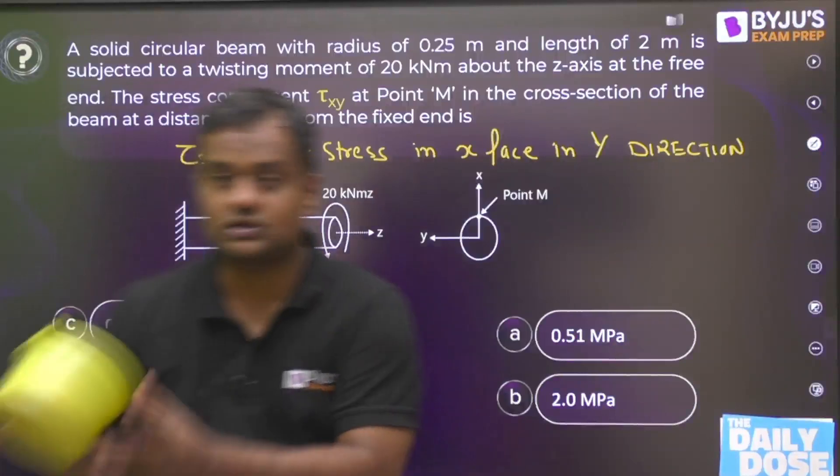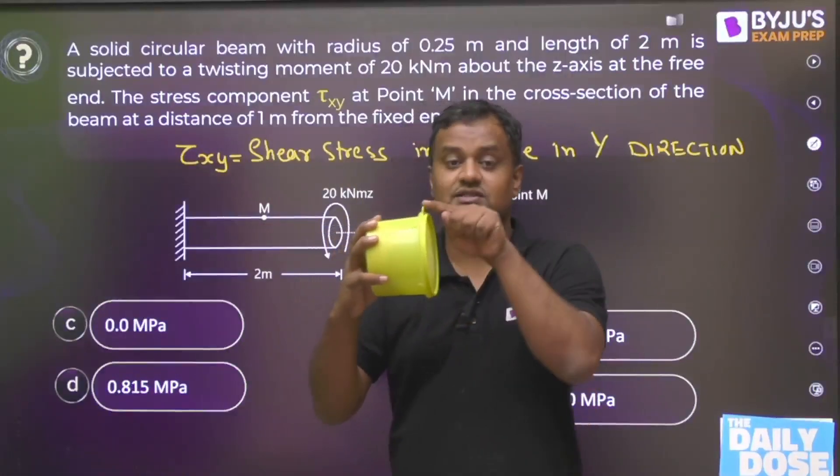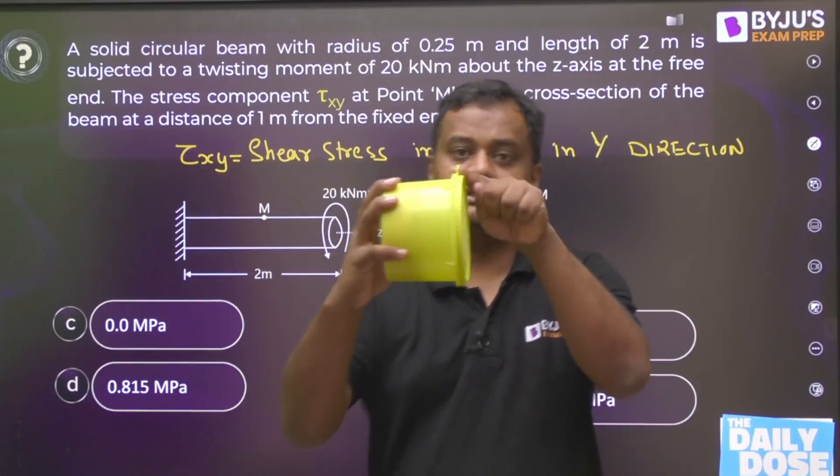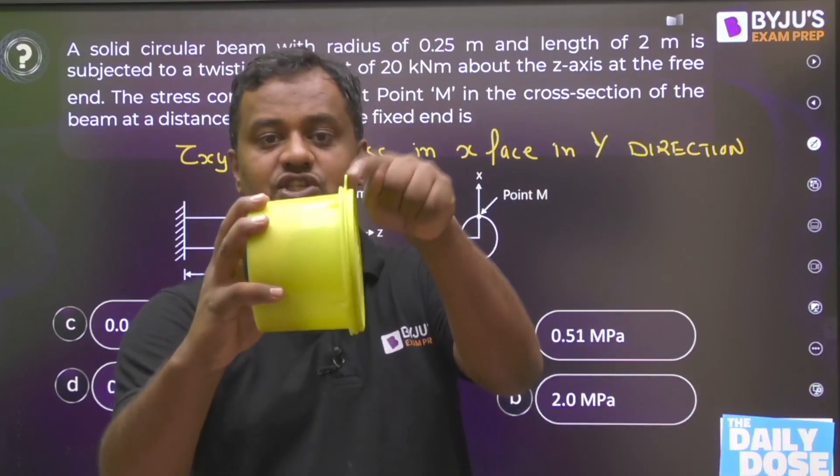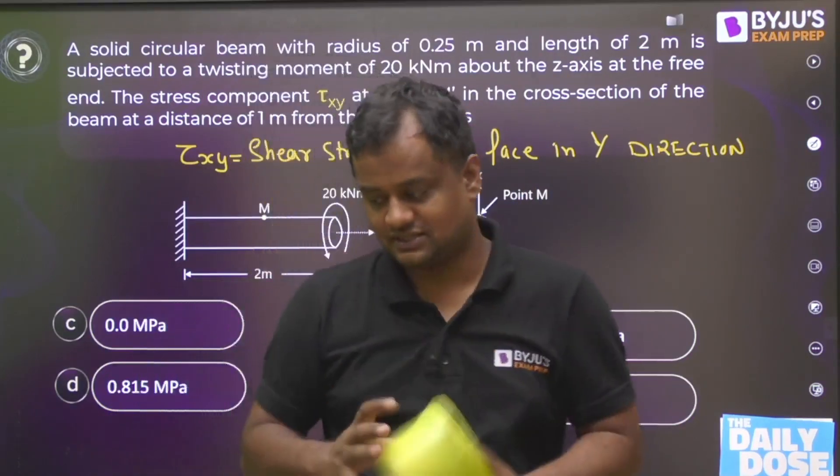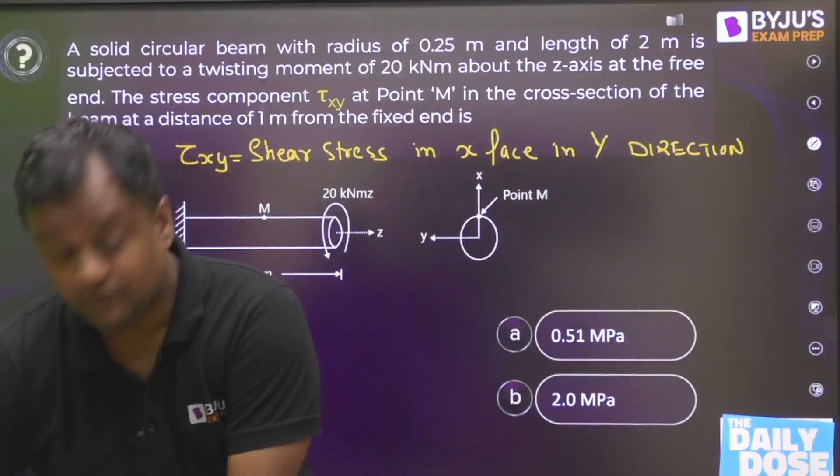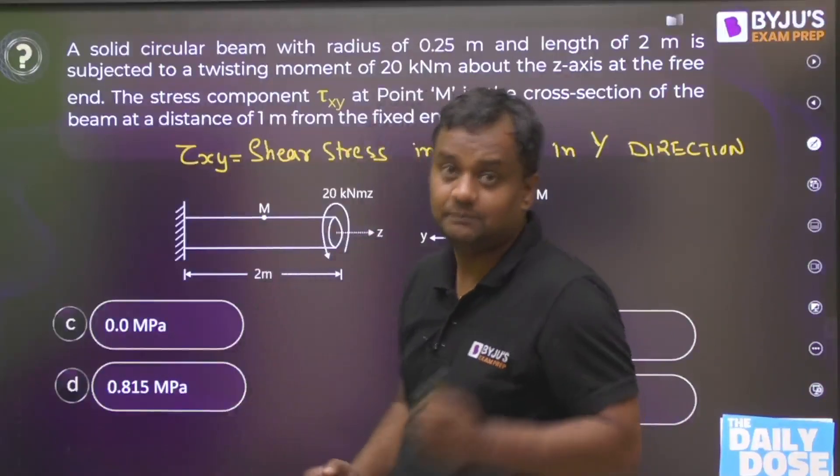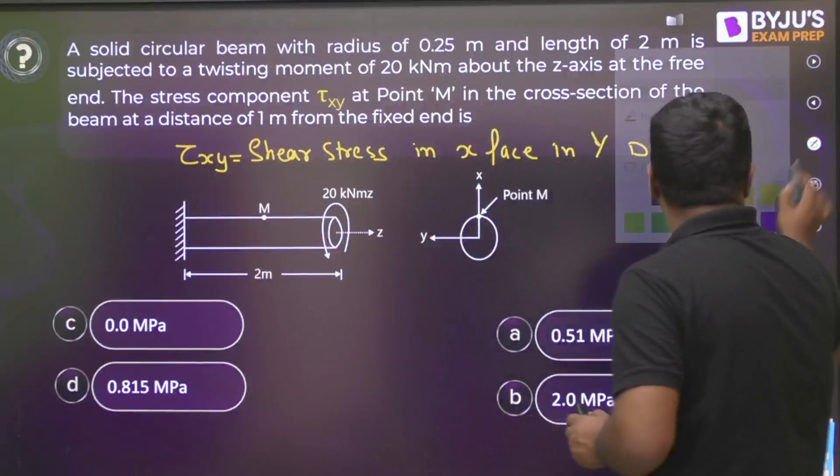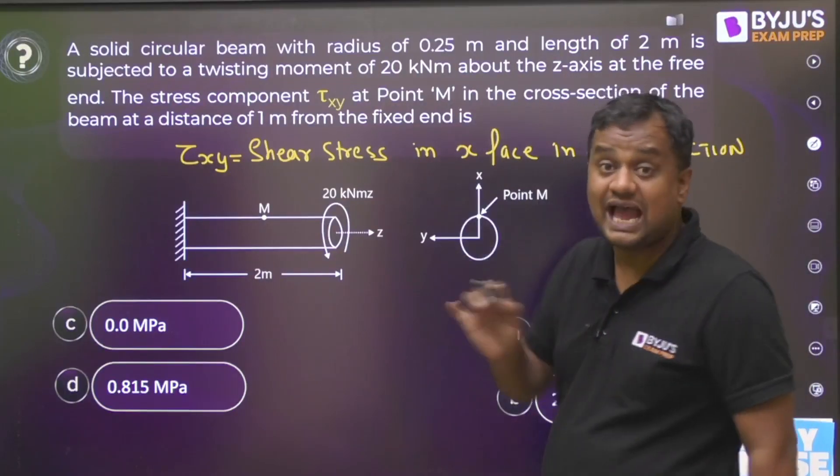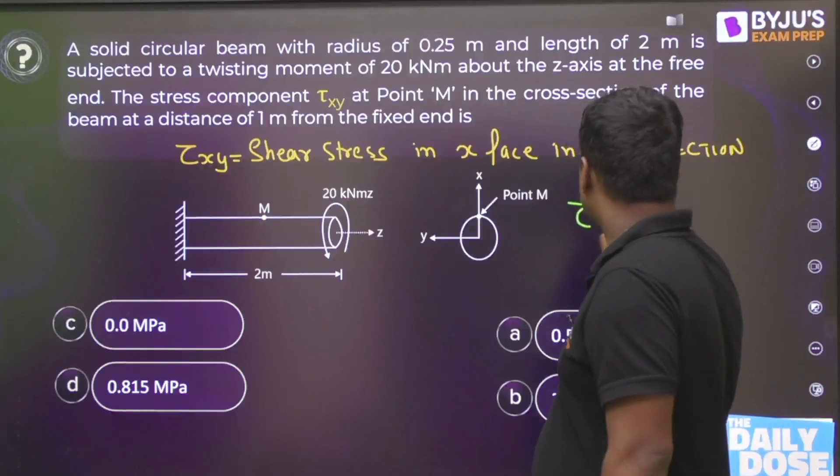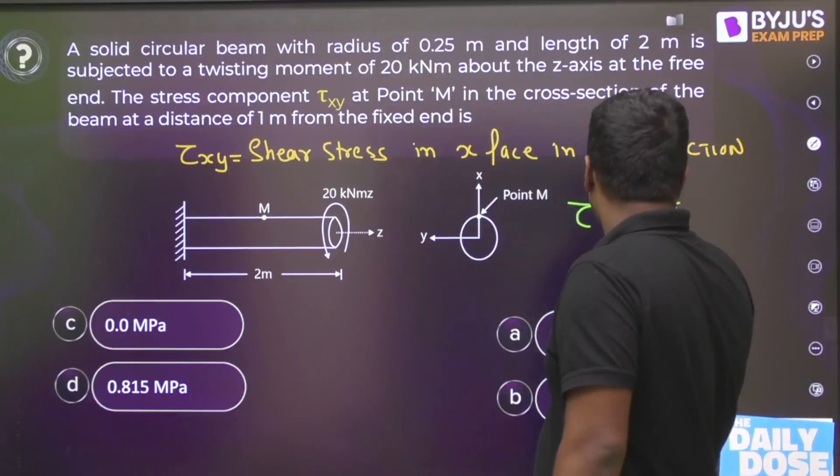Now let me tell you that suppose the cross section is circular like this. This is the M point at the top, at the circumference. The shear stress is asked. Before telling you the shear stress, you all know the torsion formula. You will be applying the shear stress at the circumference as 16T/πD³.